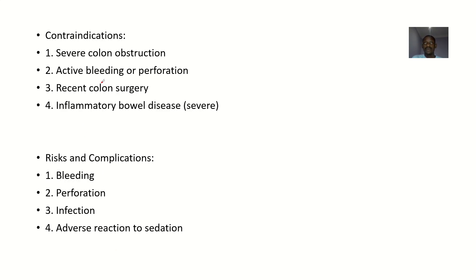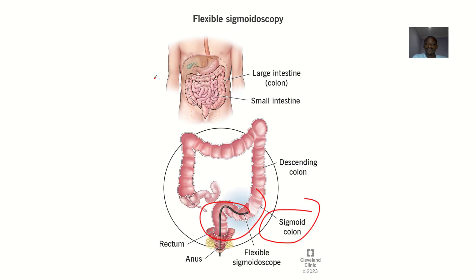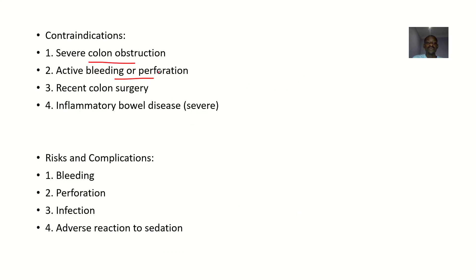Contraindications: people with severe colon obstruction — do not force the scope in. People with active bleeding or perforation — active bleeding means the blood will obscure the camera and you won't be able to see anything. Also contraindicated in people who have had recent colon surgery, or who have very severe inflammatory bowel disease.